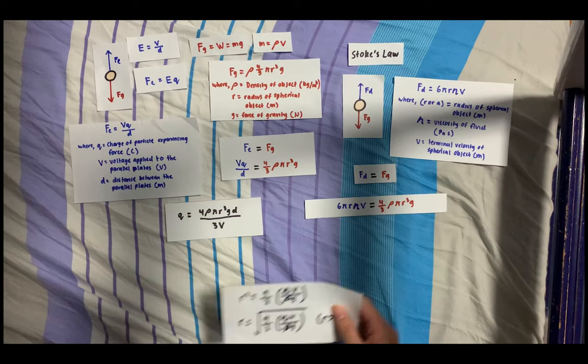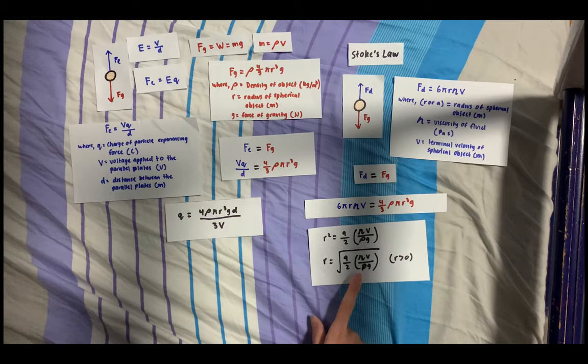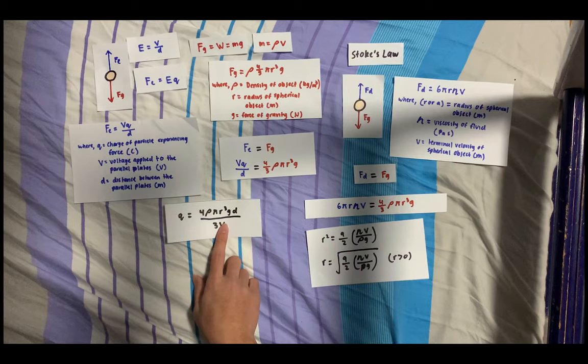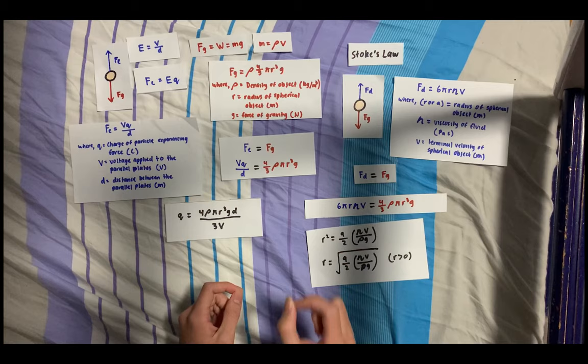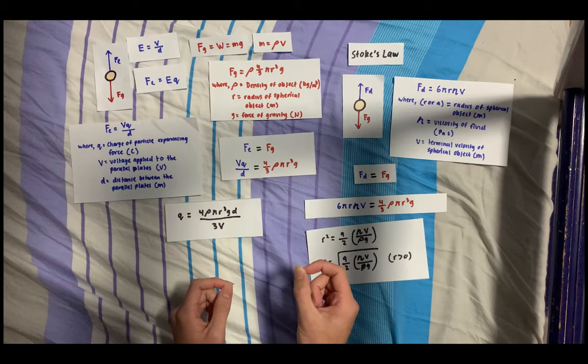If we take this equation and substitute it back into the equation of charge we found, we can find the charge of the oil droplet as all the variables and constants are known. This is one of the reasons why Millikan and Fletcher chose to do this experiment in a non-vacuum chamber, so they could use Stokes' law to help find an equation for the charge of the oil droplet.